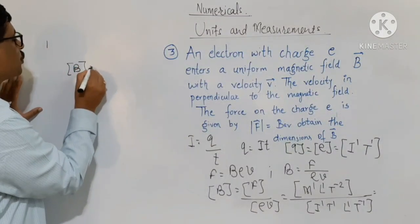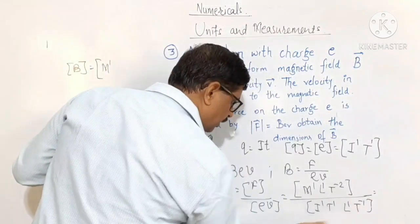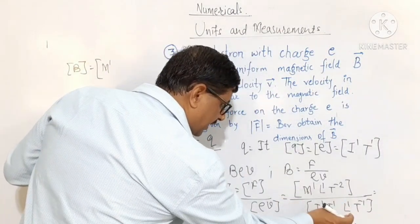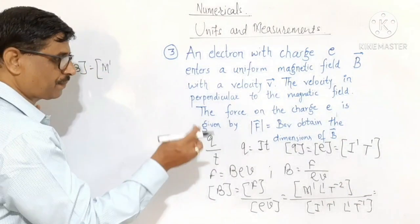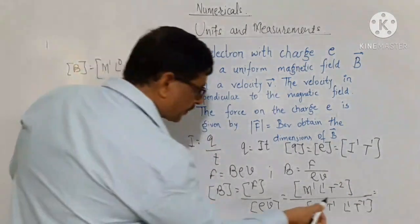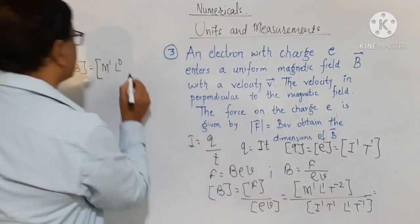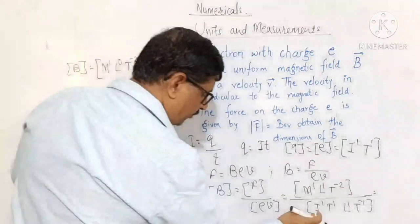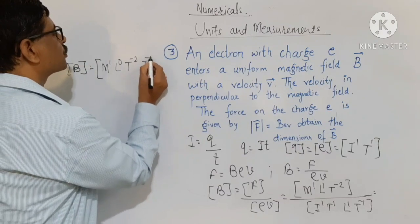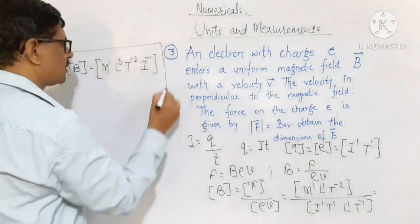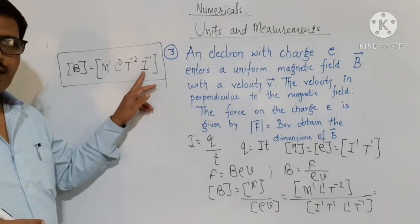The dimensions of B: M is independent, there is no M in the denominator so M1 remains. For L: L1 from the numerator and L1 from the denominator gives L1 minus 1 equals L0. For T: T minus 2 from force, T plus 1 and T minus 1 in the denominator sum to T0, so what remains is T minus 2. And for current in the denominator, I raised to 1 becomes I raised to minus 1. Therefore the dimensions of magnetic induction B are M1, L0, T minus 2, I minus 1.